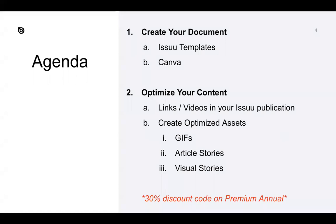You can also recreate your publication into visual stories. We're offering 30% off for anyone interested in our premium plan — for the first year you can get 30% off. I'll always mention what the premium features are; for example, the ability to add videos directly on the pages so they can autoplay. We also have auto-detection of links as a premium feature. The other optimized assets — GIFs, article stories, and visual stories — are available on all plans.